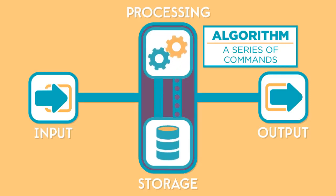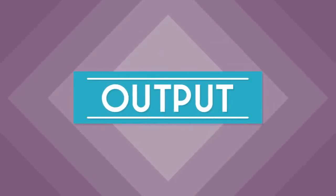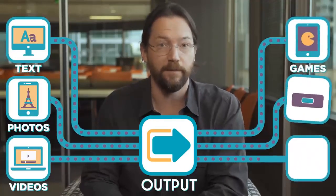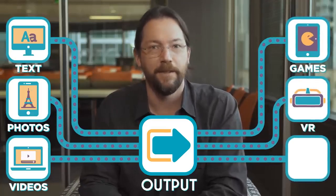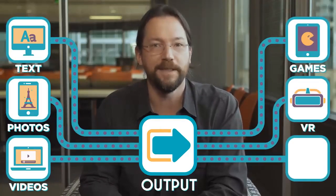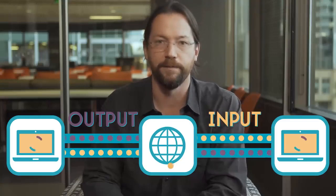This continues until the processed information is ready to be output. How a computer outputs information depends on what the computer is designed to do. A computer display can show text, photos, videos, interactive games, or even virtual reality. The output of a computer may even include signals to control a robot. And when computers connect over the internet, the output from one computer becomes the input to another, and vice versa.